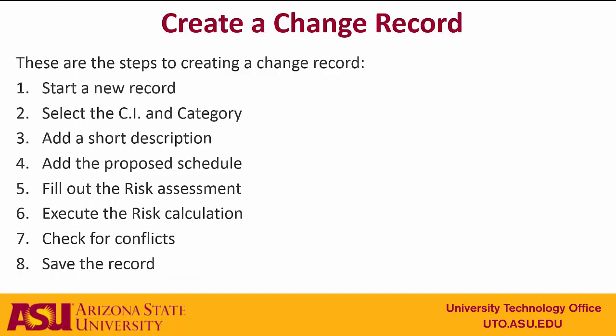When you create a change record, there are several steps that you'll go through. You'll start a new record in ServiceNow, select the CI in the category, add a short description, the proposed schedule, fill out the risk assessment, and execute the risk calculation. You'll check for conflicts, and then you'll save the record.